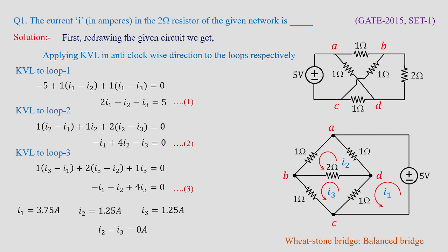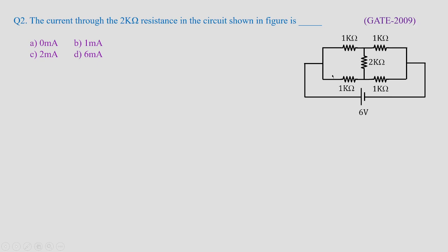The same concept was asked in GATE 2009: find the current through the 2 kilo-ohm resistance in the given circuit. If you apply the balanced bridge concept, you can see the bridge is balanced because all the resistors are of equal amplitude — 1 kΩ, 1 kΩ, 1 kΩ, 1 kΩ. All values are equal, so whatever resistance is there in between can be ignored, and the current flowing through it will be 0 amperes.